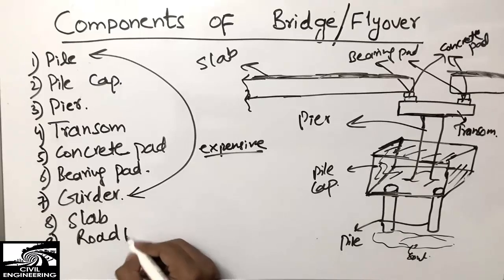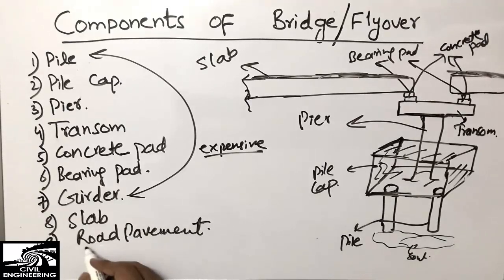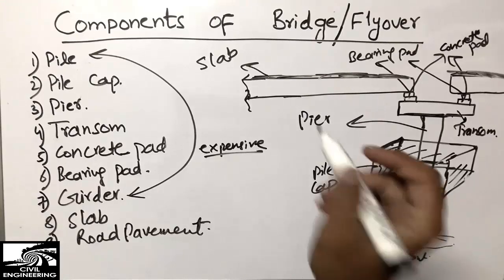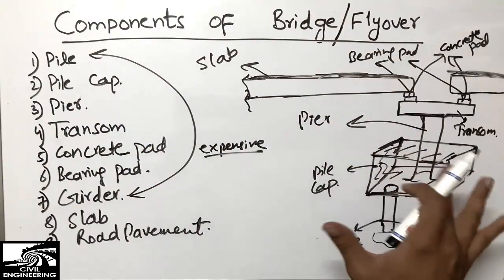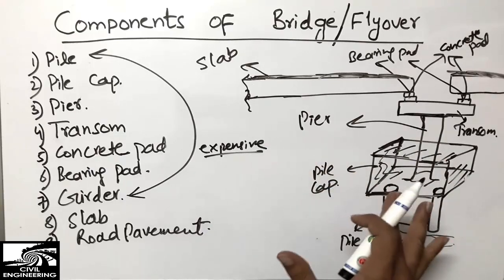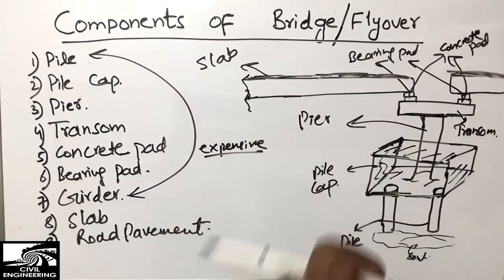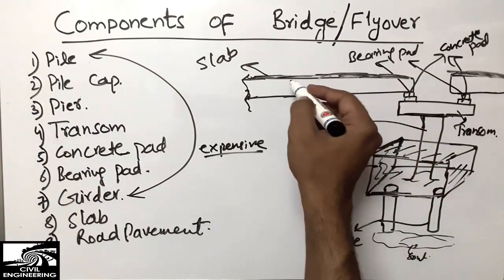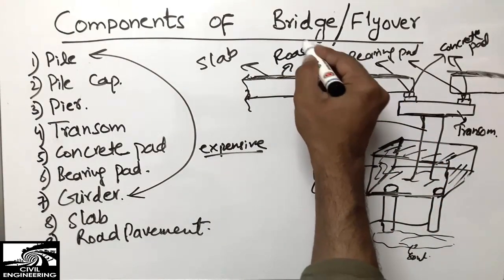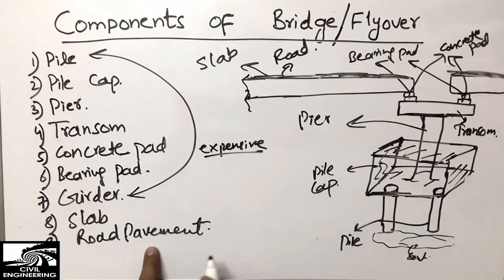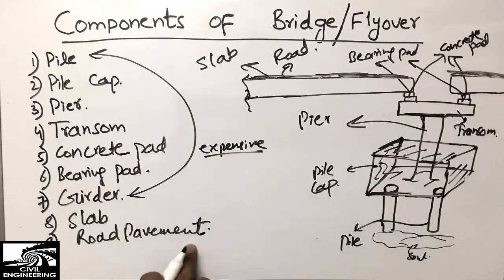We put the road pavement on top of the slab to create the riding surface, so that cars, trucks, or any type of vehicle can move on the top of the bridge. The road pavement is the last component, and it is very important because it is the surface on which traffic will move.